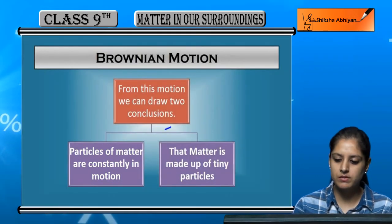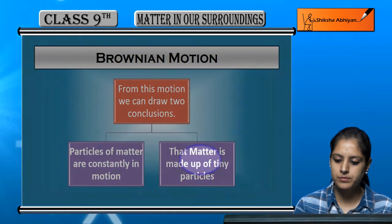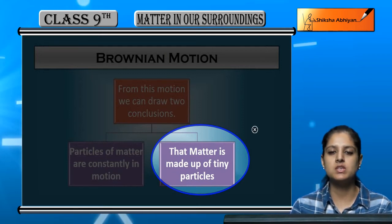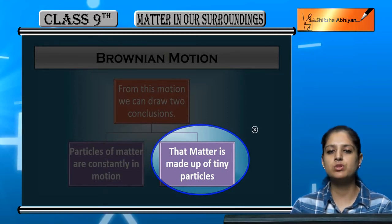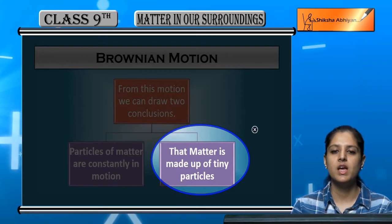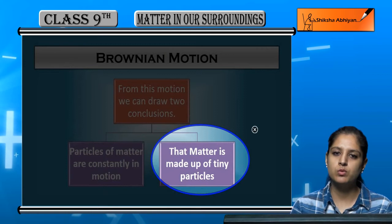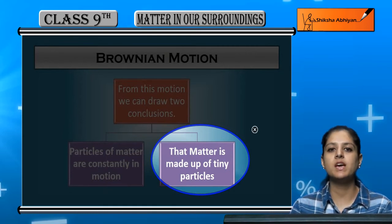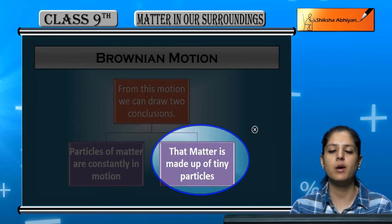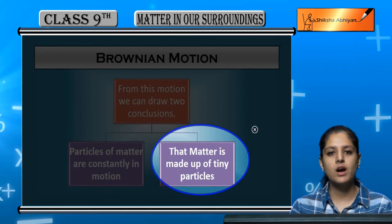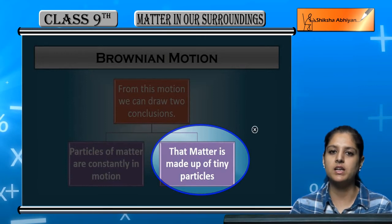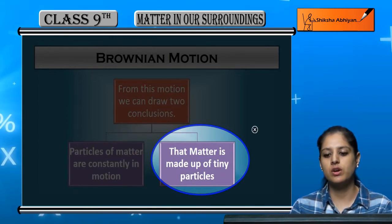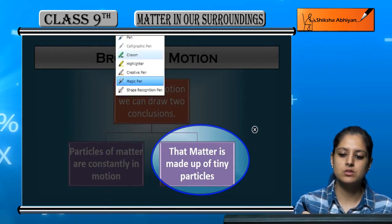The second conclusion we can draw from Brownian motion is that matter is made up of tiny particles. For example, if you have small boxes and big boxes, small boxes can move easily. So if something is constantly in motion, it means its size must be small. Therefore, the second conclusion is that matter is made up of tiny particles — small particles.